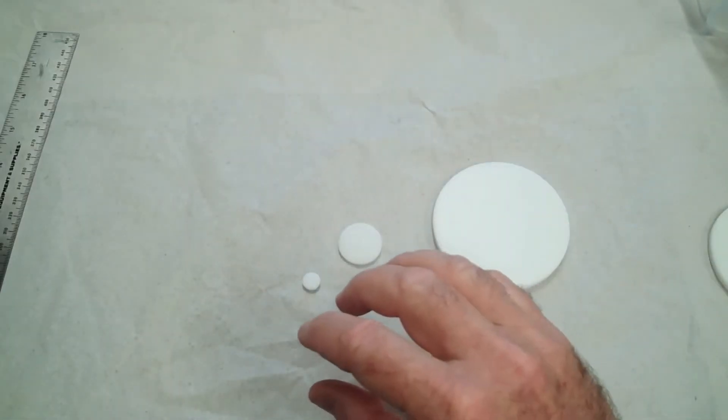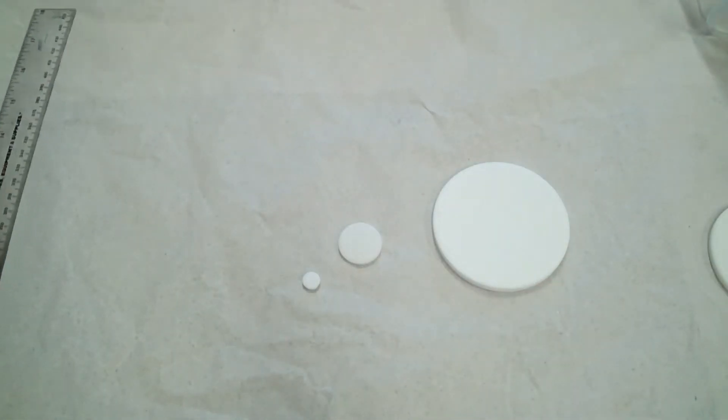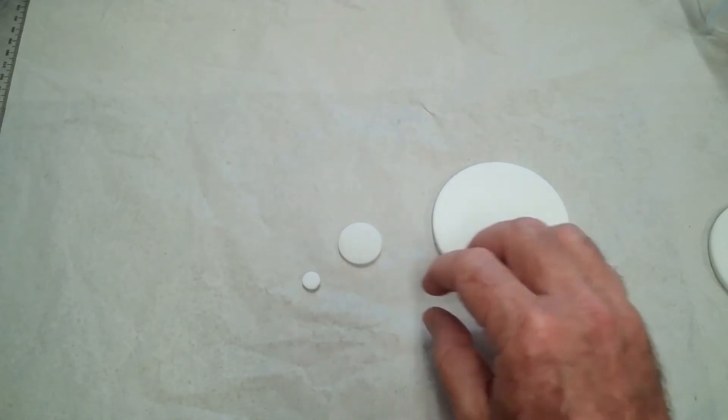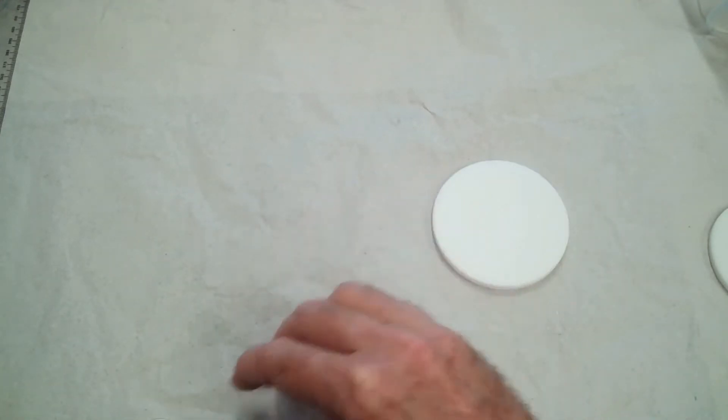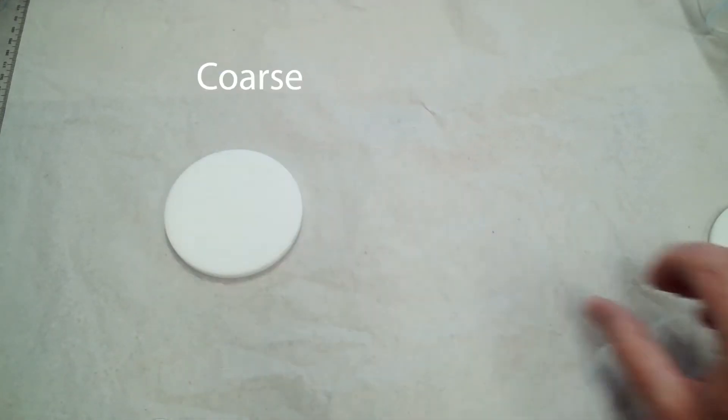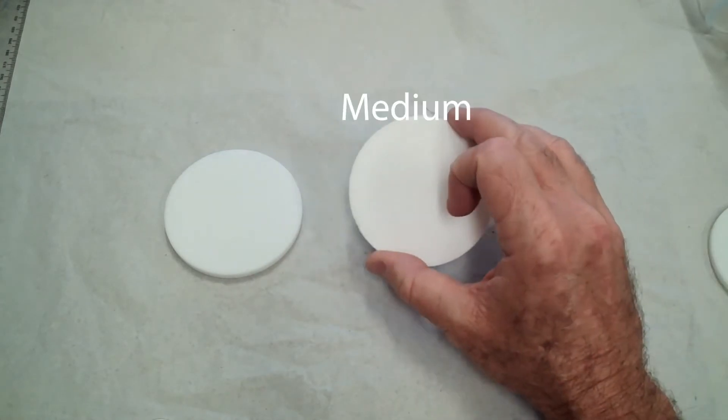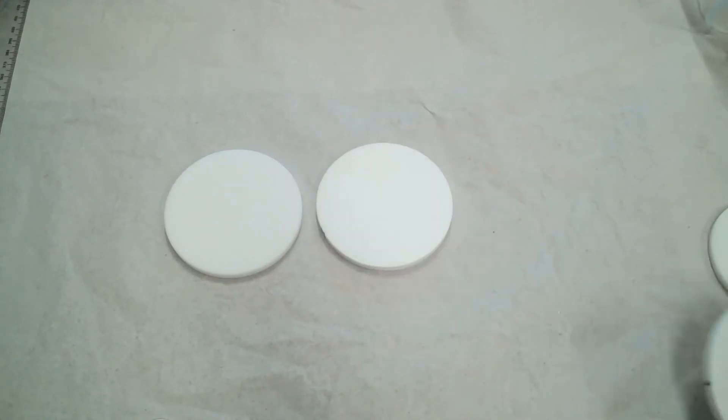The other characteristic of the filter disc is the porosity. There are the basic types of porosity: the most common is coarse porosity, medium, or fine.